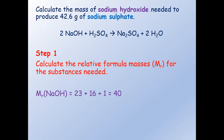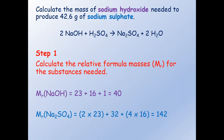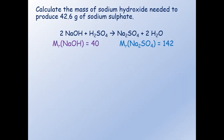Then we do the same for sodium sulfate. This time we have 2 times 23 because we have 2 sodium atoms, plus 32 for the sulfur, plus 4 times 16 for the oxygen. This gives us a relative formula mass of 142. So we remember those and write them at the top.